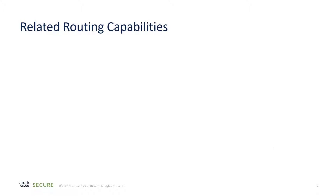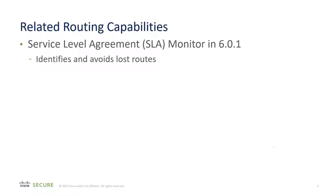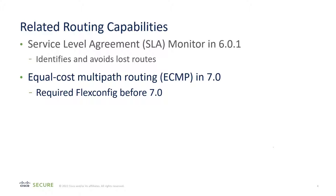Let's talk about some related routing capabilities. Since the very inception of the Cisco Secure Firewall, we have supported, in the Management Center, Service Level Agreement, or SLA Monitoring. This can identify and avoid lost routes. In the 7.0 release, we took a feature that already existed in the firewall — ECMP — but it required the use of FlexConfig, meaning you had to write statements directly to the data plane. We moved that capability into the Management Center in the 7.0 release.